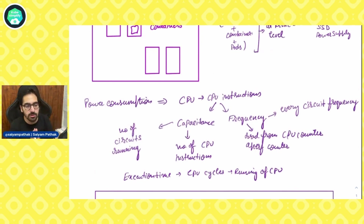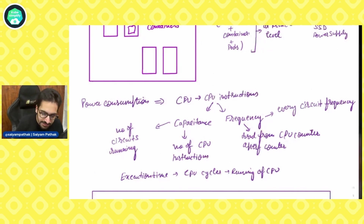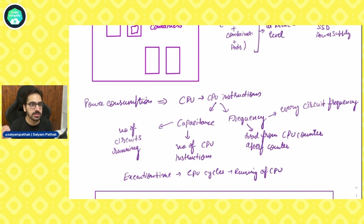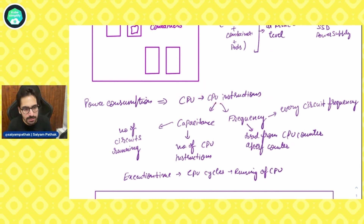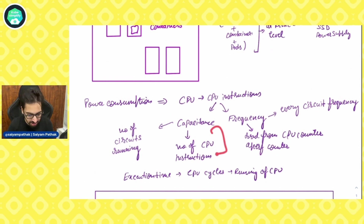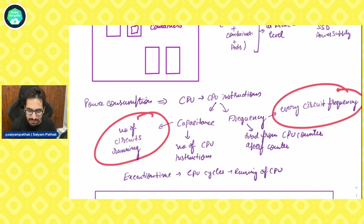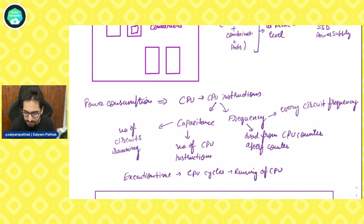Let's talk briefly about power consumption, because it's important to understand how things are calculated at the Linux level, at the pods level, and at the processes level. In the CPU world, we have CPU instructions. We calculate the capacitance — the number of circuits running — and the number of CPU instructions. In terms of frequency, we calculate every circuit's frequency using CPU counters like the APERF counter. We measure capacitance, frequency, number of CPU instructions, CPU cycles, and read from the CPU counter.